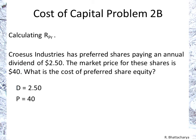The equation for a perpetuity is simply D over P, and that is 2.5 over 40, which yields a result of the return on the preferred share as 6.25%. That's all there is to this part of it.